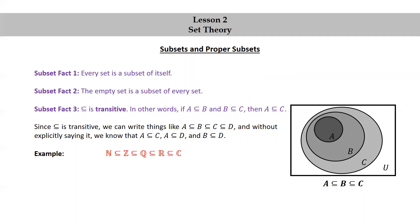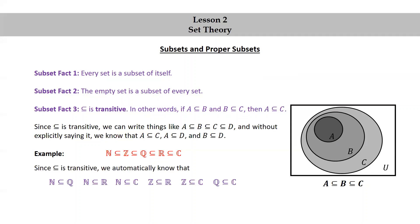Let's look at an example. N is a subset of Z, is a subset of Q, is a subset of R, is a subset of C. We've seen this earlier. Since the subset relation is transitive, we automatically know that N is a subset of Q, N is a subset of R, N is a subset of C, Z is a subset of R, Z is a subset of C, and Q is a subset of C.